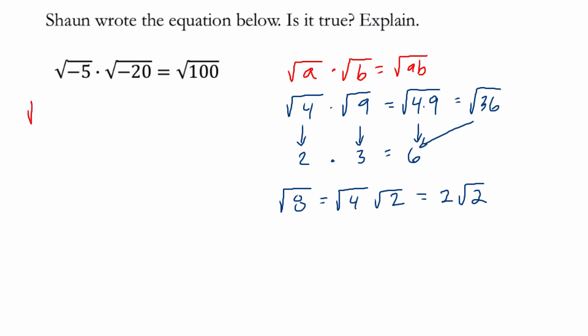If we rewrite our first terms as the square root of 5 times the square root of negative 1, and the second term as the square root of 20 times the square root of negative 1, and then here we'll leave the square root of 100 as it is for now.